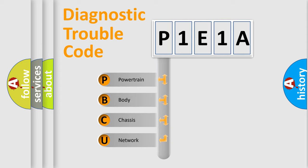We divide the electric system of automobiles into four basic units: Powertrain, Body, Chassis, and Network.